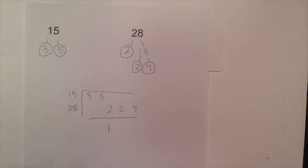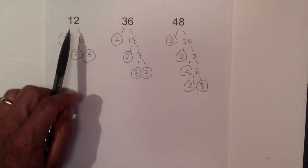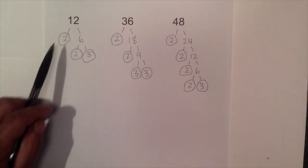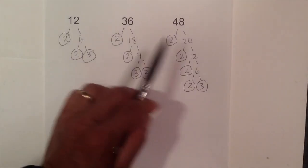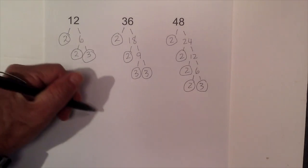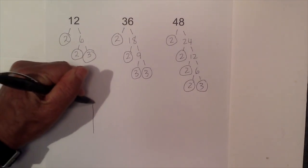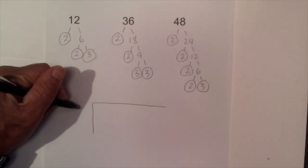Next, let's work a couple with 3 numbers. Let's go ahead and find the GCF for 3 numbers. I have gone ahead and completed the factor trees for each of these, so I am going to complete a prime factorization chart.